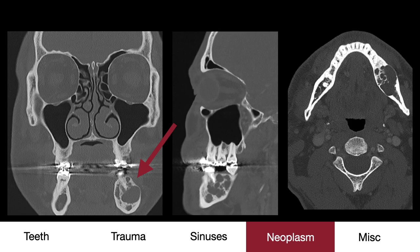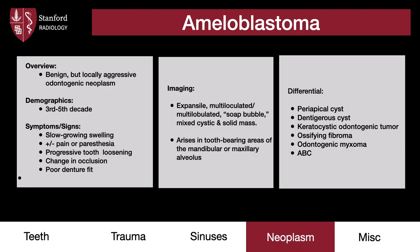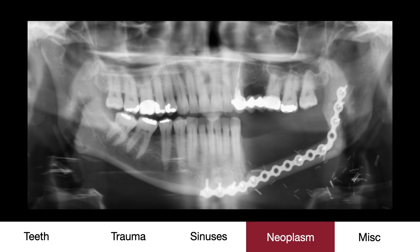This lesion turned out to be an ameloblastoma. As a brief overview, this neoplasm is benign but locally aggressive and of odontogenic origin. It commonly affects individuals between the third to fifth decade and presents with a slow-growing swelling, with or without pain or paresthesias. Patients typically report progressive tooth loosening, poor denture fit, or a change in dental occlusion. On imaging, we see that soap bubble appearance, and the lesion usually arises from a tooth-bearing area, such as the mandibular or maxillary alveolus. The differential is wide, and the lesion is typically resected, with postoperative imaging shown.